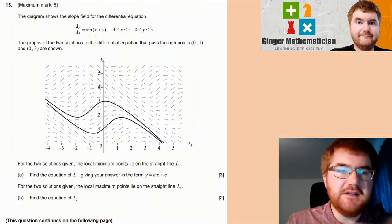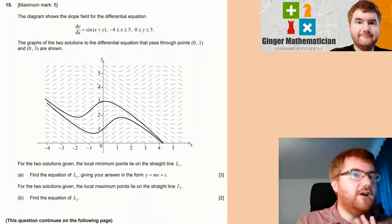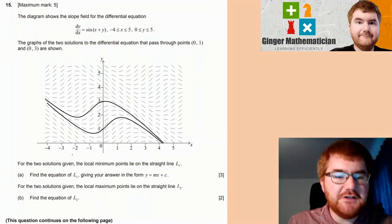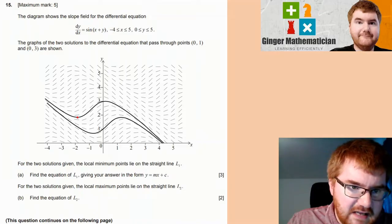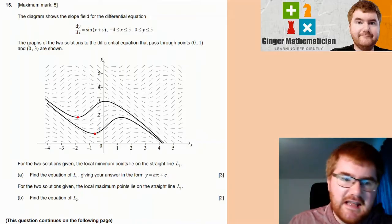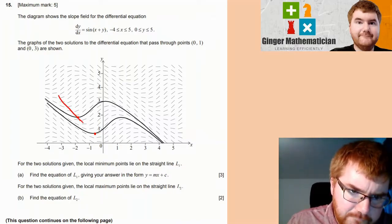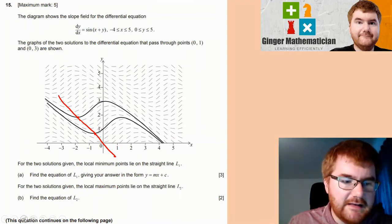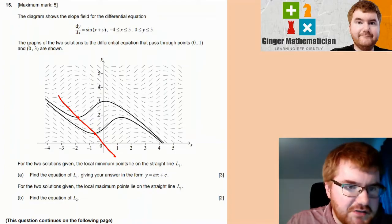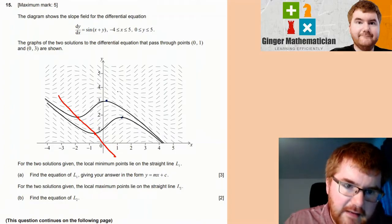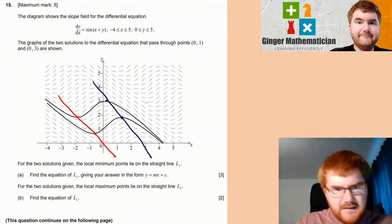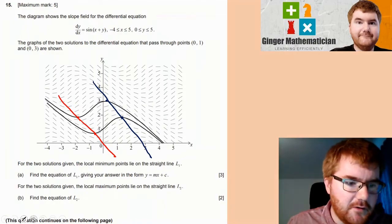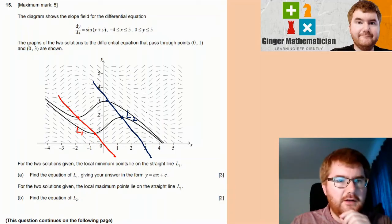For the following differential equation dy/dx = sin(x + y), we're given two solutions — riding the waves of the slope field. The local minimum and maximum points lie on straight lines. The minimum points are here and here, making a straight line L1. The maximum points also form a line L2. We need to find the equations of both lines.